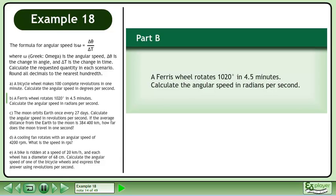In Part B, a Ferris wheel rotates 1,020 degrees in 4.5 minutes. Calculate the angular speed in radians per second.